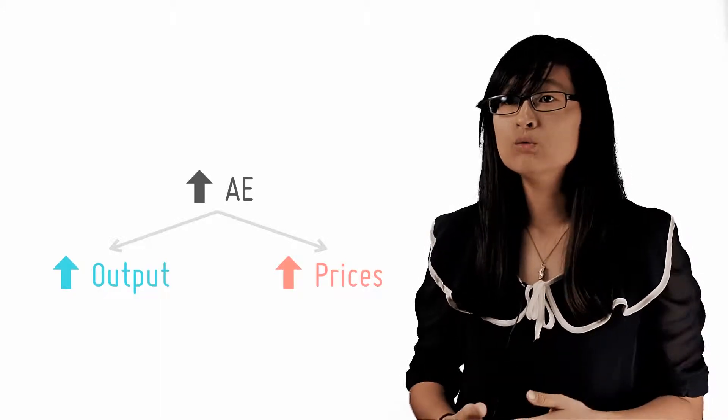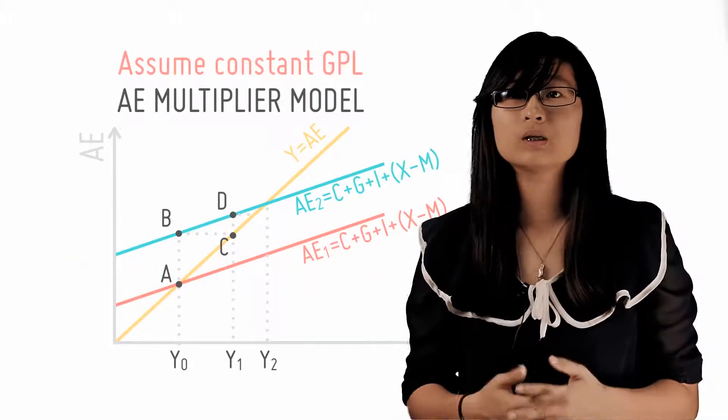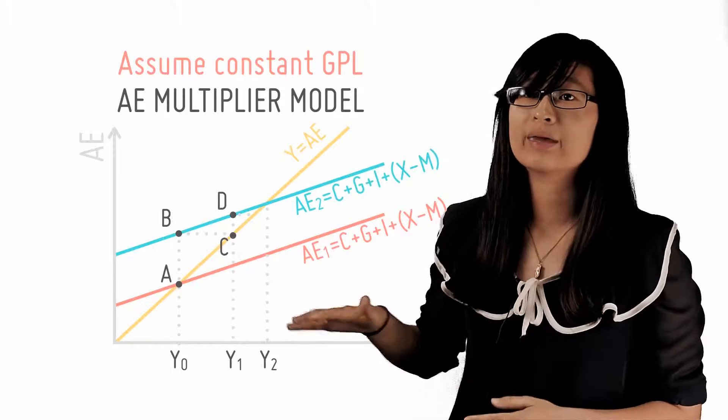In the AE model, we've assumed a constant general price level. This means the economy is operating on the Keynesian range.